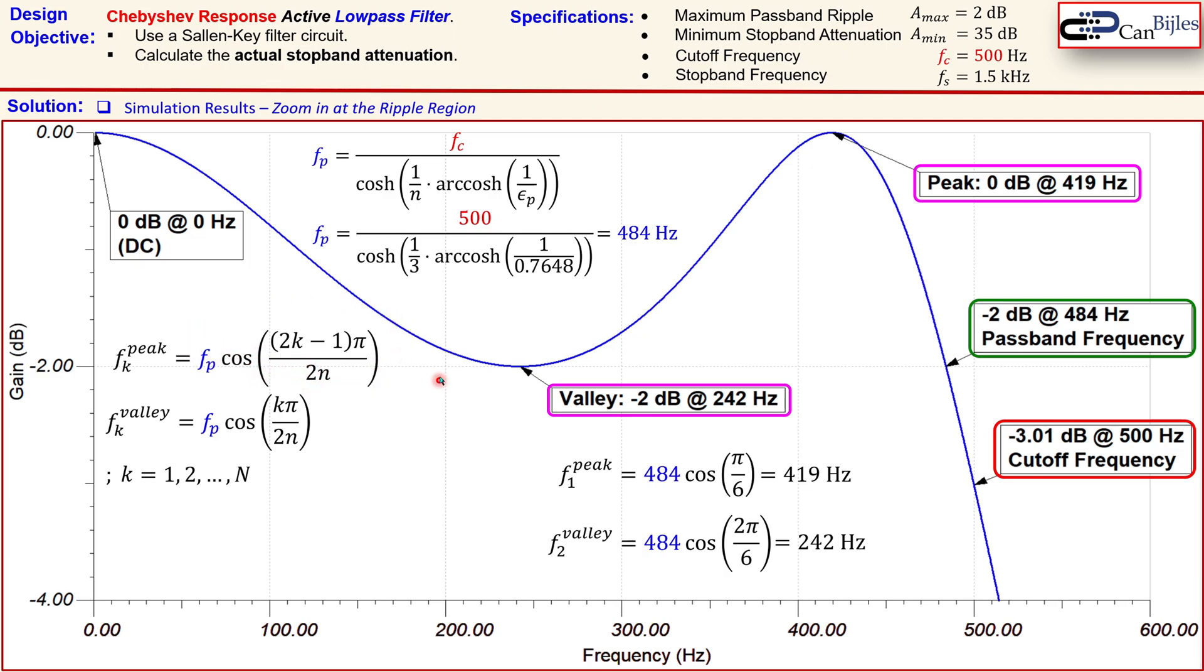So, this will be then, for K is 2, that will be then 2 pi over 6, will be then pi over 3. That will result, if you do the calculation here, 242 Hz, which is also here. So, we have now determined by formula where the valley and the peak frequencies are.